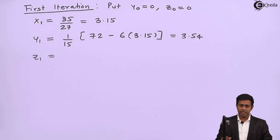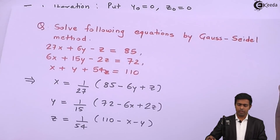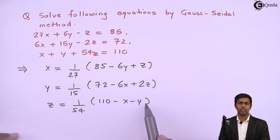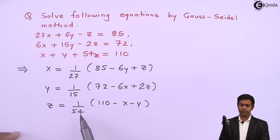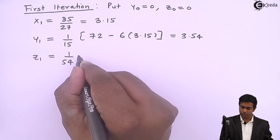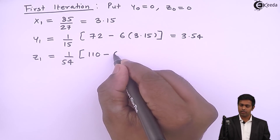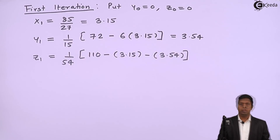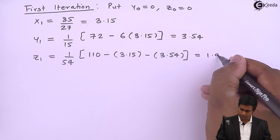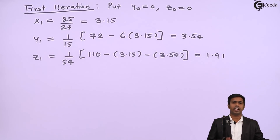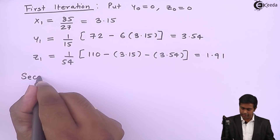Now, y₁ = 3.54 is the most recent value of y. For z₁, we use the most recent values x₁ = 3.15 and y₁ = 3.54: z₁ = (1/54)(110 − 3.15 − 3.54) = 1.91. So after the first iteration we have x₁ = 3.15, y₁ = 3.54, z₁ = 1.91. We now move to the second iteration.